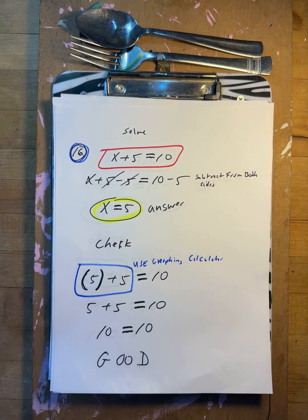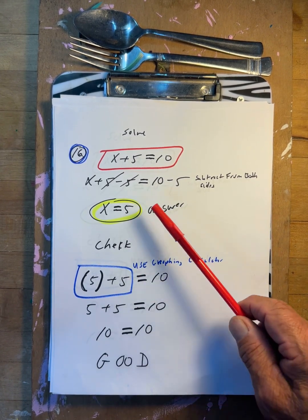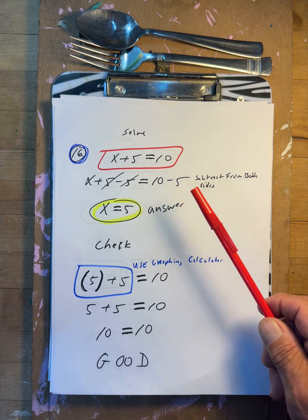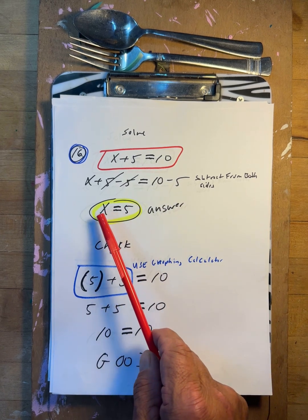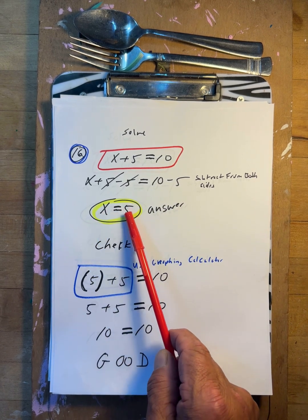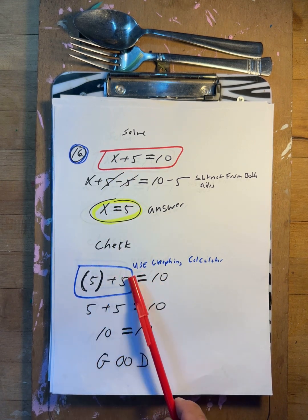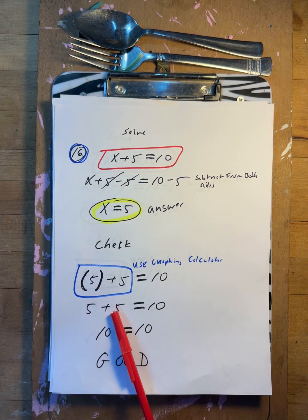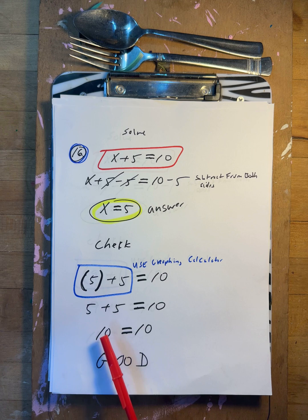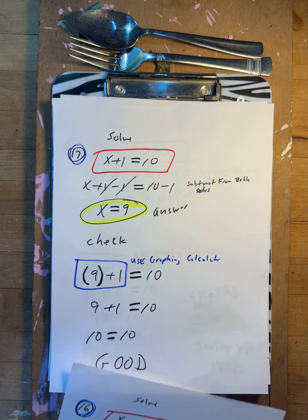x plus five equals ten. Minus five, minus five. So x equals five. Put it back in: five plus five — take the parentheses off — five plus five is ten. Ten equals ten. Good, it matches — equation works.